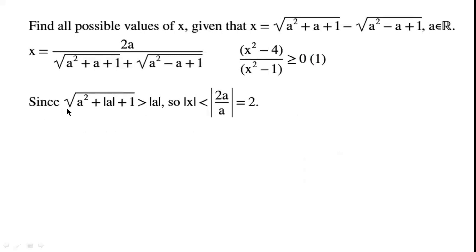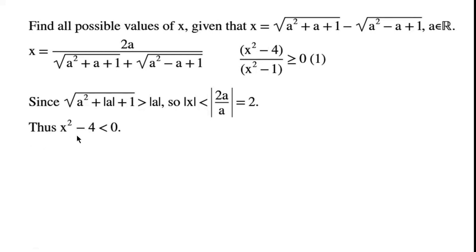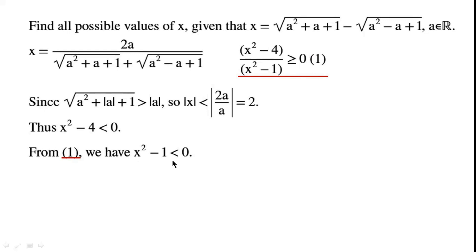Since the square root of a squared plus a plus 1 plus the square root of a squared minus a plus 1 must be greater than the modulus of a, the modulus of x is less than 2a over a, which equals 2. So x squared minus 4 is less than 0. Combined with Inequality 1, we have x squared minus 1 is less than 0, hence minus 1 is less than x is less than 1.